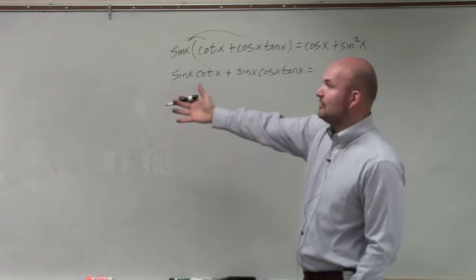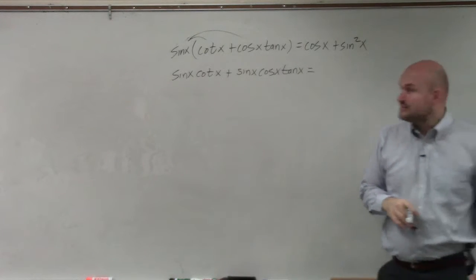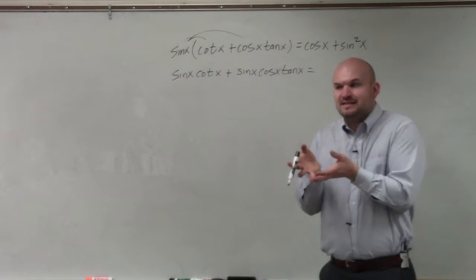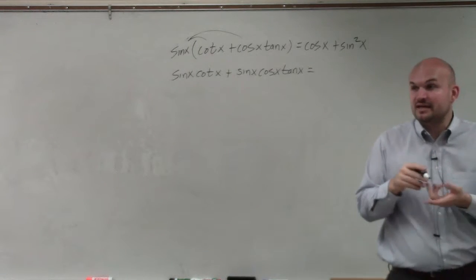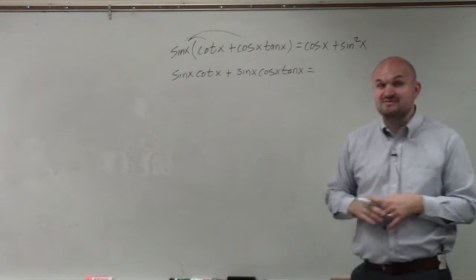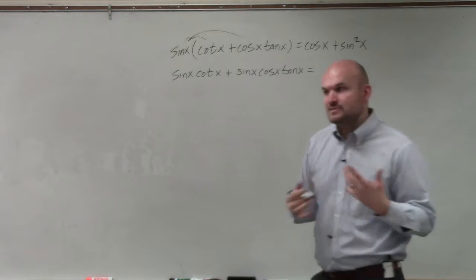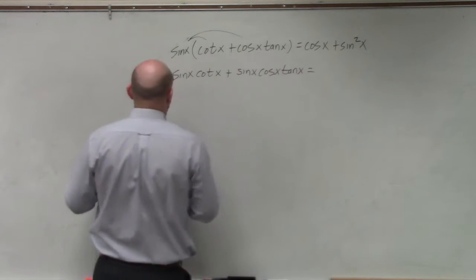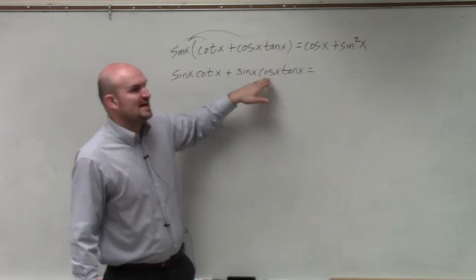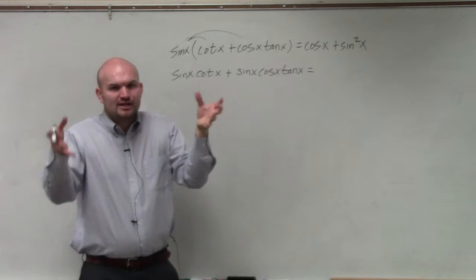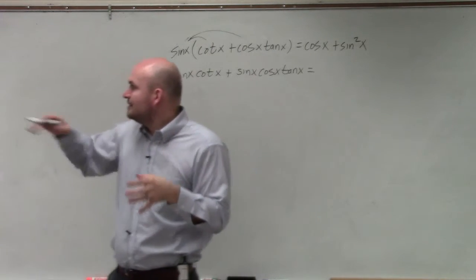But now I want to use my identities. The best identities in this case would be my reciprocal and quotient identities. Basically I'm going to want to rewrite everything in terms of sines and cosines. Rather than saying cotangent is 1 over tangent or cosine is 1 over cosecant, you want to group them together.